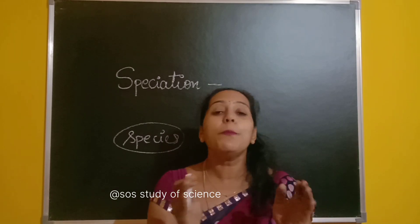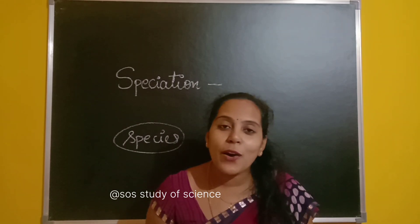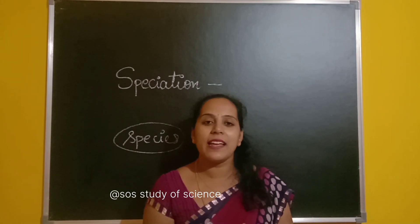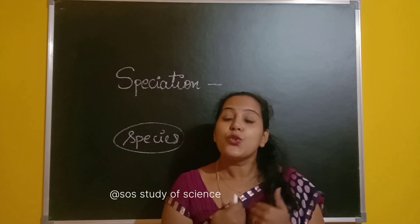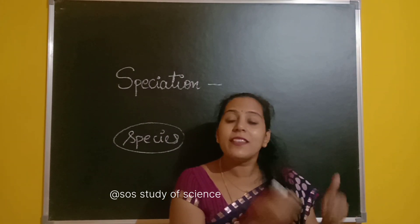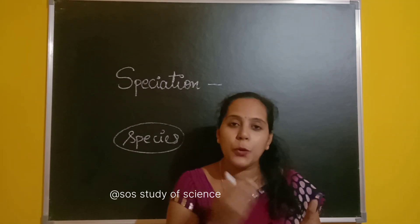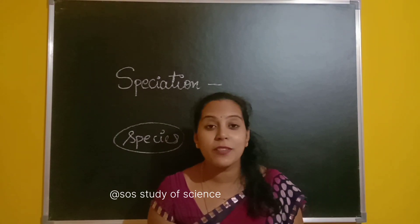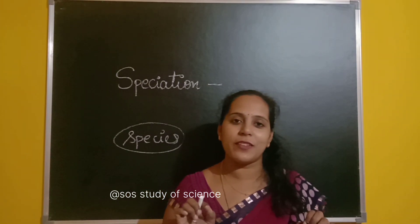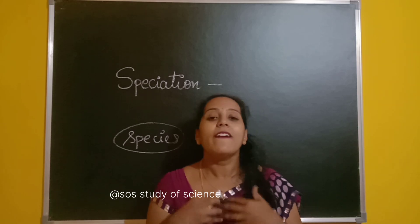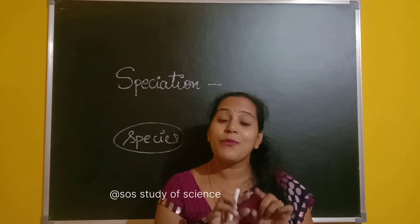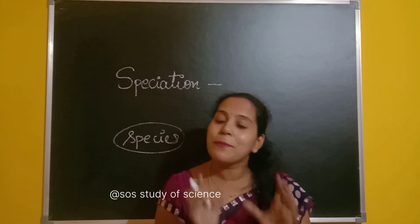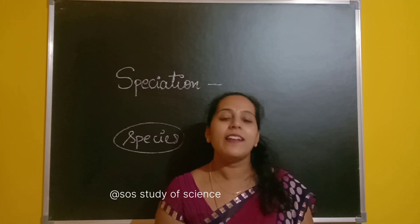Species is nothing but a group of organisms which have similar characters and they can interbreed with each other. For example, we human beings are one particular species. We can interbreed with other human beings. Can a human interbreed with a dog? It is not possible. Can a human interbreed with a lion? It is not possible, because lion is a different species and dog is a different species. We can interbreed with the opposite human being only, because we have similar characters. A group of organisms which have similar characters and which can interbreed with each other are called a species.